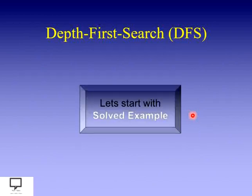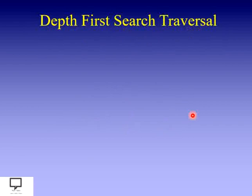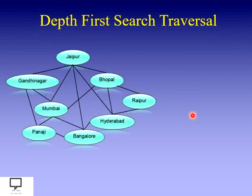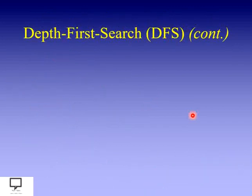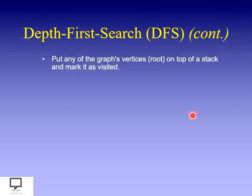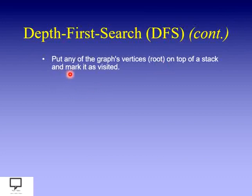Let's start with the depth first search traversal technique with a solved example. For a given real-time graph, we are going to traverse it using depth first search. First, let's see the algorithm. The prerequisite is: we start from any arbitrary vertex of the graph — that vertex is termed as the root vertex — and we push it onto the stack while simultaneously marking it as visited.